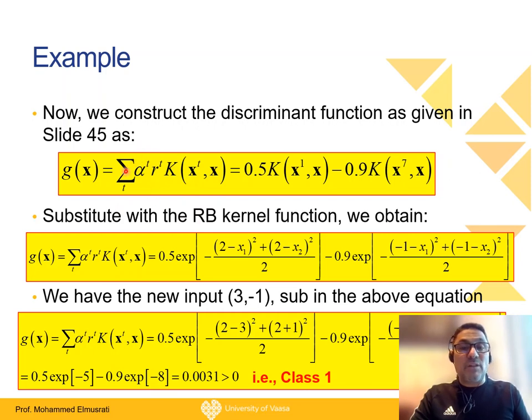All alpha values are zeros except for two: the first entry and the seventh entry. For the first entry, α_1 = 0.5 and r = +1. For the seventh entry, α = 0.9 (limited by C), and r = -1 since it's class 2. So we have 0.5×K(x¹,x) - 0.9×K(x⁷,x). This makes it much easier than other machine learning algorithms.